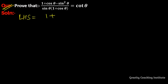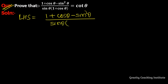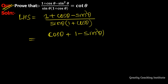So LHS = (1 + cosθ - sin²θ) / (sinθ · (1 + cosθ)). Applying the identity 1 - sin²θ = cos²θ, the numerator becomes cosθ + cos²θ, giving us (cosθ + cos²θ) / (sinθ · (1 + cosθ)).